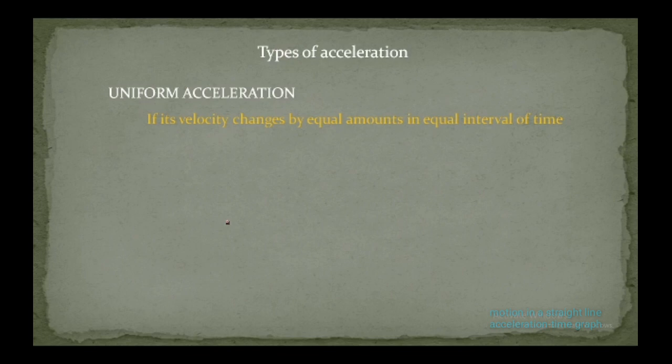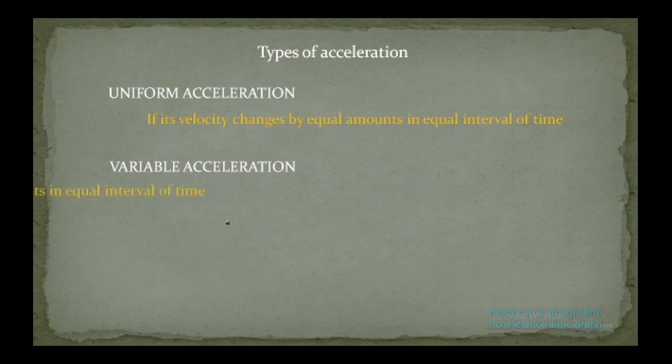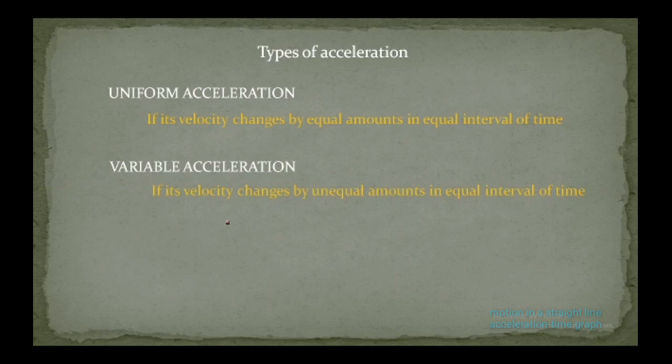Now let's discuss variable acceleration. The name itself symbolizes changing. The acceleration of an object is said to be variable if its velocity changes by unequal amounts in equal intervals of time. Unlike uniform acceleration, the velocity here keeps on changing with respect to time.